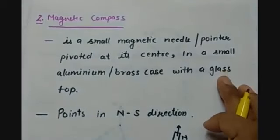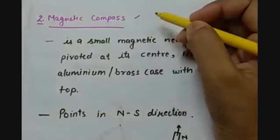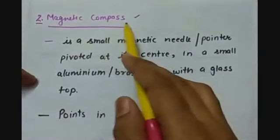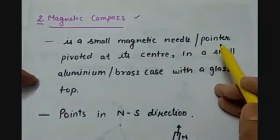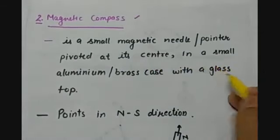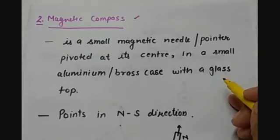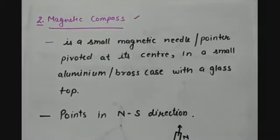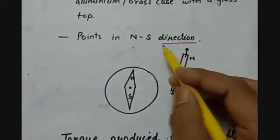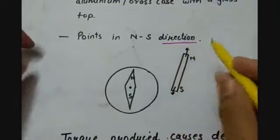There are many other types of magnets, like horseshoe magnets and electromagnets, but we generally use a magnetic compass for navigation, widely used by sailors. A magnetic compass is a small magnetic needle, or pointer, pivoted at the center in a small aluminum or brass case with a glass top. It can rotate on a horizontal plane and always points in the north-south direction of the earth.